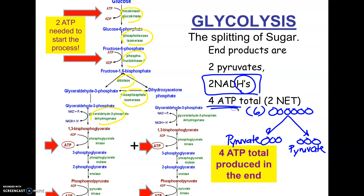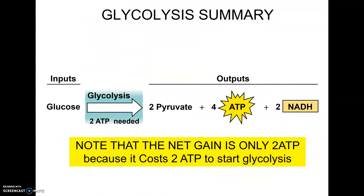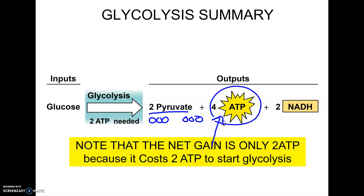Glycolysis makes a total of four ATP. However, it costs two ATP to get it started, so your net gain is only two. You're only ahead by two ATP. And that's the whole step of glycolysis. To summarize: you start with one glucose, it gets broken into two pyruvates — three carbons each. You make four ATP but your net gain is only two, and you make two of the coenzyme NADH.